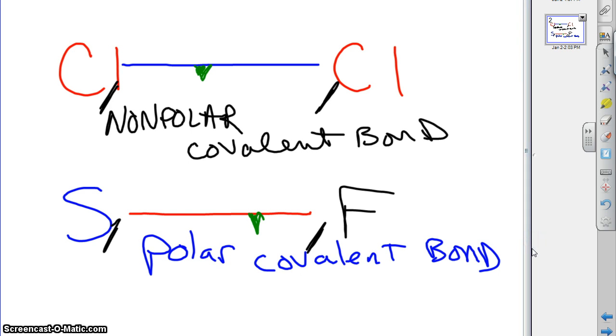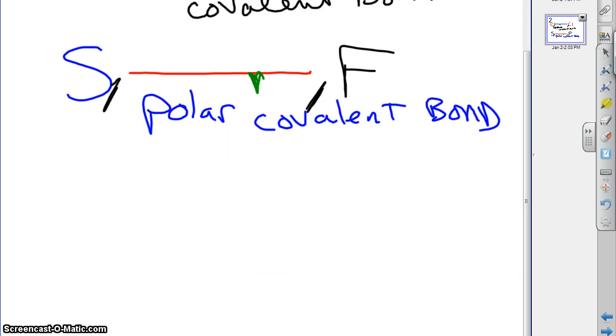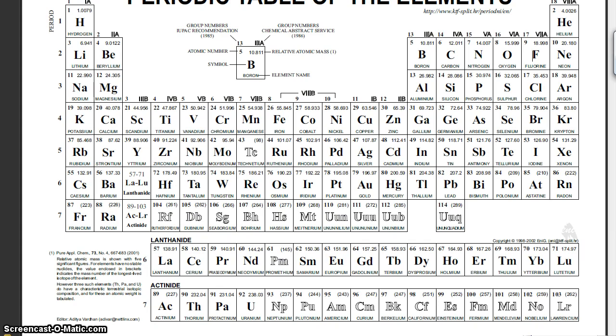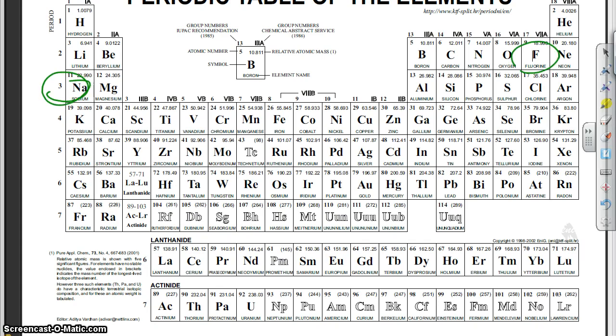And so, our final example, which you can probably predict what's going to happen here, if you're paying close attention, let's take something like sodium and fluorine. Sodium, let's put this little flag here in the middle again. And sodium, if we go back and look at the periodic table, sodium's way over here. Fluorine's way over here. Sodium's going to have a much, much smaller electronegativity than fluorine.